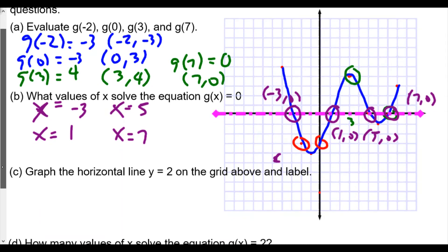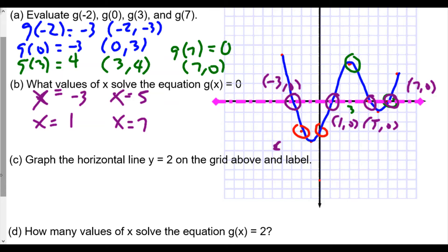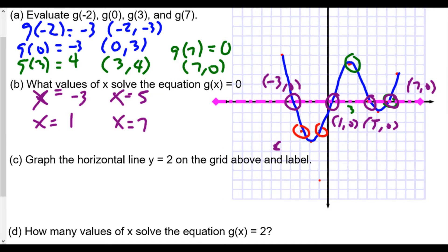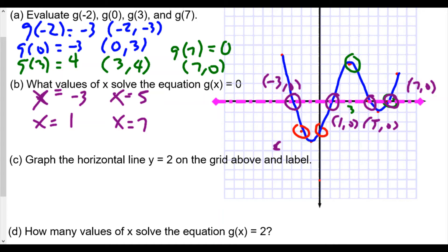For part C, graph the horizontal line y equals 2 on the grid above. So I'm going to graph the line y equals 2. Let's see now. y equals 2. I'm going to use a dot line here. So y equals 2 is going to be a horizontal line where the graph crosses. I'm going to graph this now. y is equal to 2. Here we go. I'll extend a little bit. So this is when y is equal to 2. So we'll graph this. This is y equals 2. Now I'll label that there.